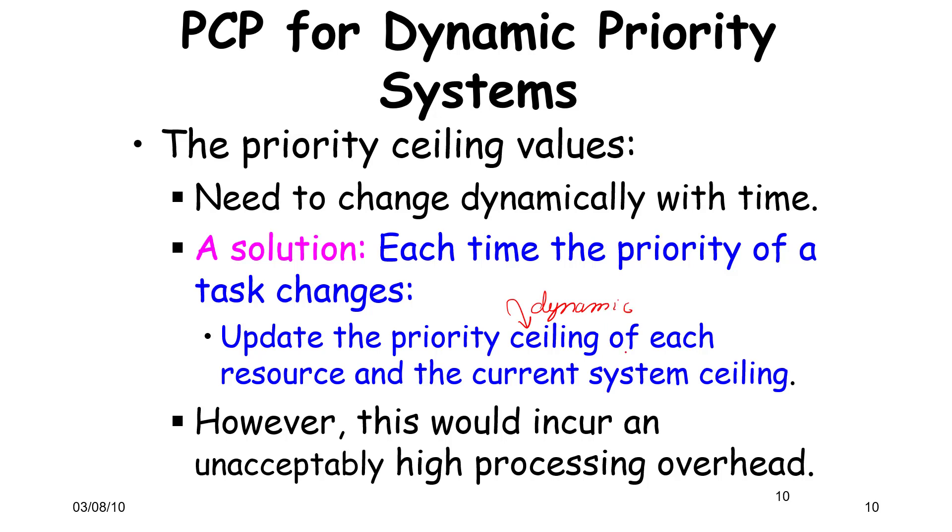Wherever the priority of a task changes dynamically, the priority ceiling which was previously static will now become dynamic. All of these things have to be changed, which will increase the overheads of the system. Given that this would be an unacceptably high processing overhead, this is seldom done. We use an RMS-like organization or system where tasks by and large remain static for both scheduling simplicity and because it is much easier to analyze.